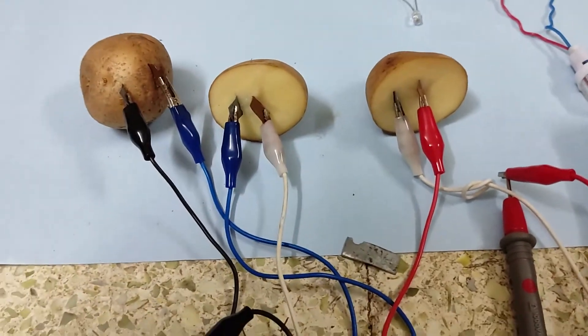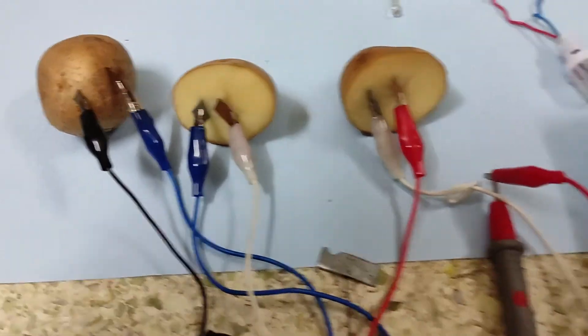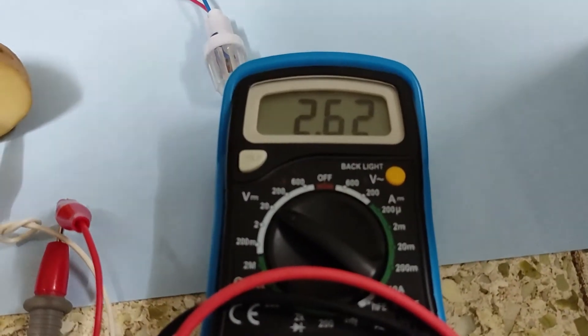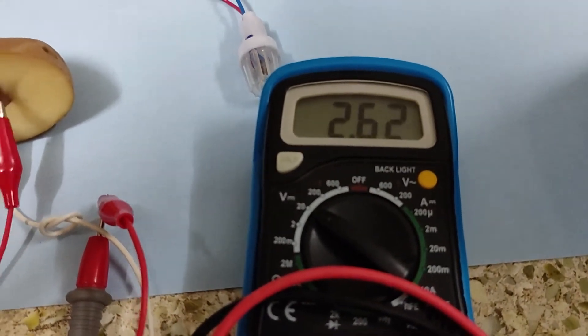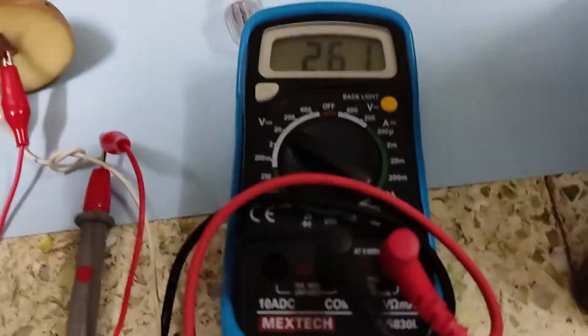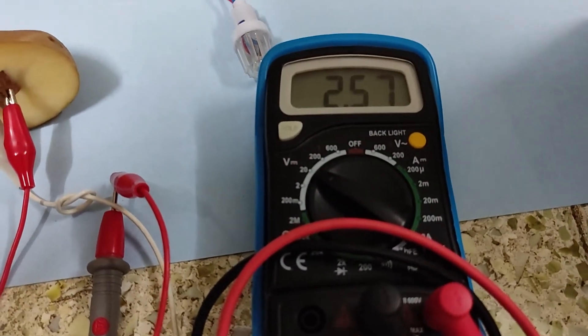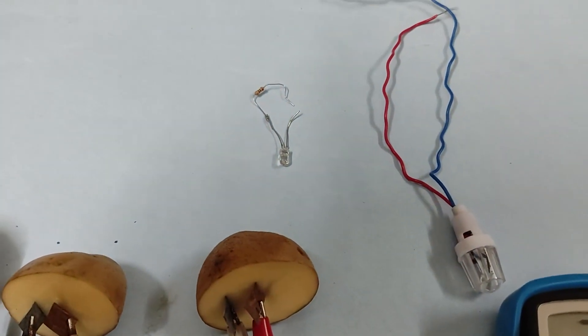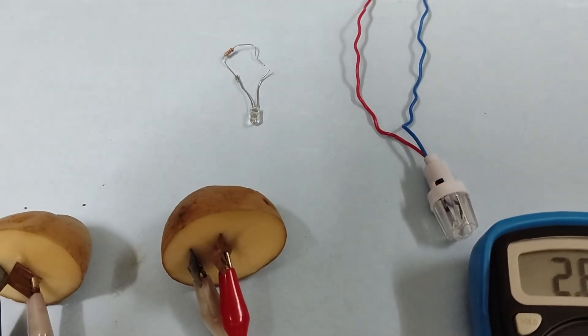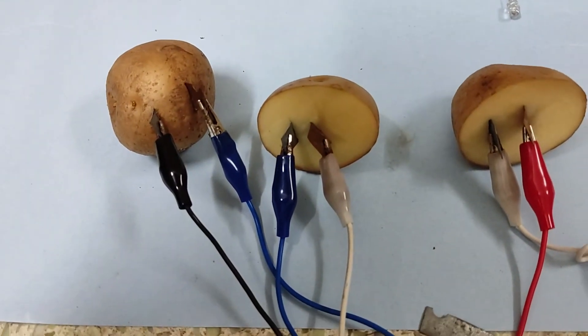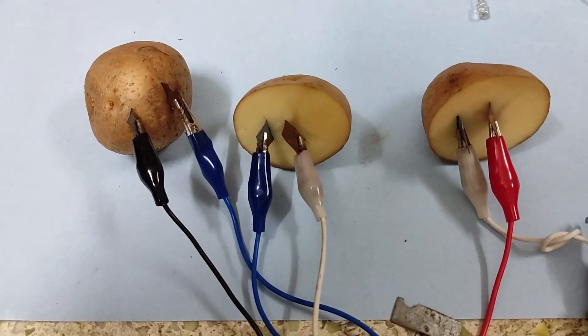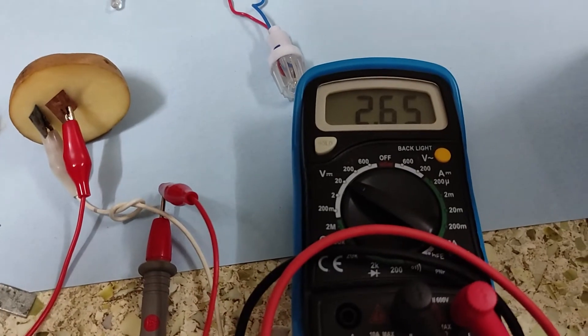Now, three potatoes are connected. It is measuring 2.6 voltage, roughly 2.6 voltage. It is sufficient to light an LED which is rated for 2 to 3 volts. We can glow the bulb. These three potatoes generate roughly 2.6 volts.